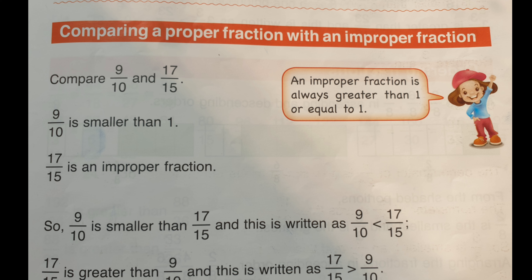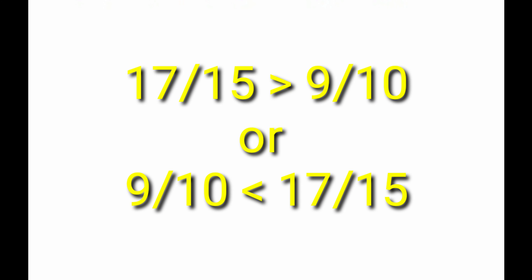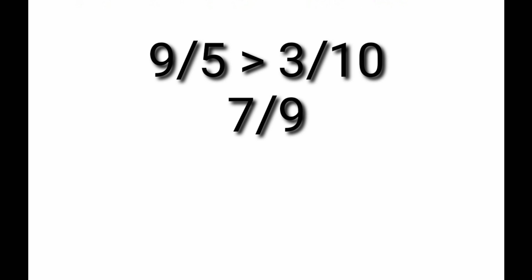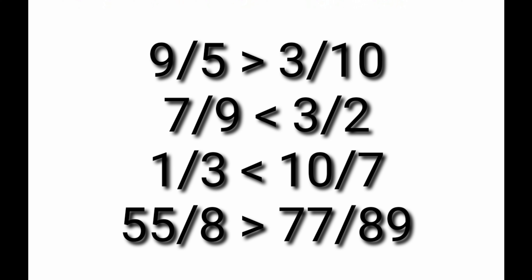Next is comparing a proper fraction with an improper fraction. An improper fraction is always greater than or equal to one, and can be converted to a mixed number, so the same rule applies. Comparing nine tenths and seventeen fifteenths: seventeen fifteenths is greater than nine tenths. More examples: nine fifths is greater than three tenths; seven ninths is smaller than three halves; one third is smaller than ten sevenths; fifty-five eighths is greater than seventy-seven over eighty-nine.